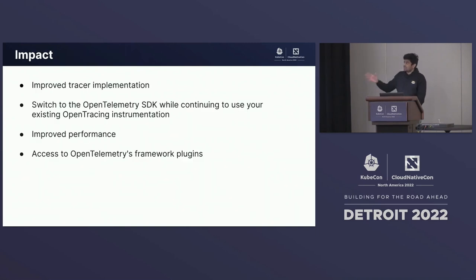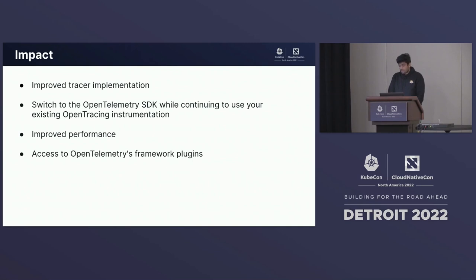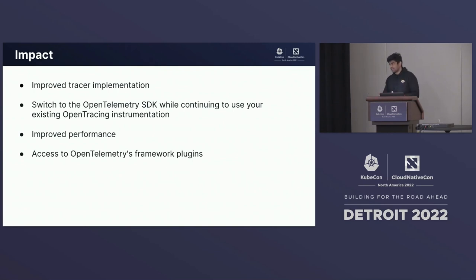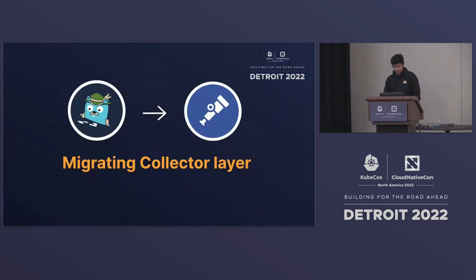The impact after migrating: you get an improved tracer implementation. Baggage and other things just work. The switch to the OpenTelemetry SDK while using OpenTracing via the shim is also a possibility. There is improved performance — OpenTelemetry SDKs are more performant. And you get access to OpenTelemetry framework plugins — each language has its own way of integrating into the SDKs, with feature-rich framework plugins.